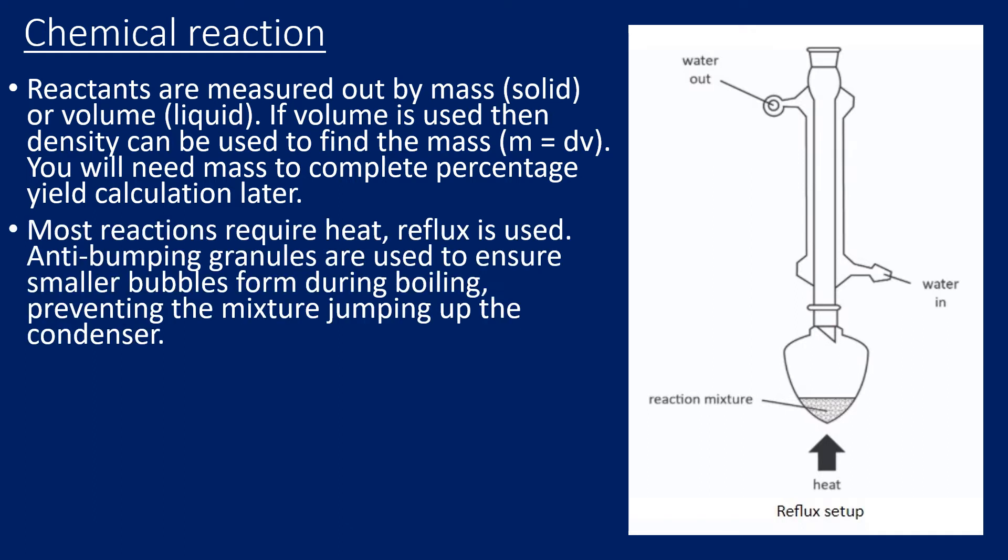Most reactions require heat, so we'd use a reflux and set up the apparatus as shown in the diagram. Anti-bumping granules are often used because they allow smaller vapor bubbles to form within the mixture, preventing violent bubbling that could cause the reactive mixture to jump up into the condenser. As shown in the diagram, water goes in at the bottom and out at the top — the flow of water is always against gravity. Notice that the top of the tube is open with no stopper or thermometer. The heat source is typically a water bath or electric heater, since organic reactants are often flammable and we don't want to use a naked flame.